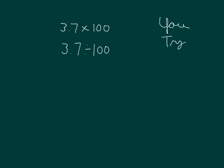Okay, your turn to do some work. Please go ahead and multiply 3 and 7 tenths by 100, and then also multiply 3 and 7 tenths divided by 100. Use a place value chart. Pause the video while you do your work.